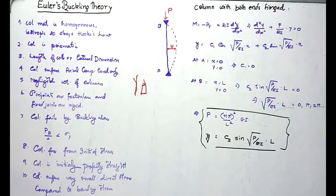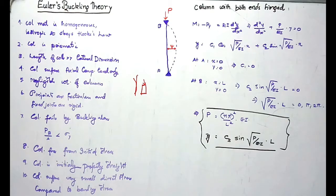The fifth assumption is negligible weight of the column, because the column's self-weight produces direct stress. That is why it is taken as negligible. The sixth assumption is that pin joints are frictionless and fixed joints are completely rigid.